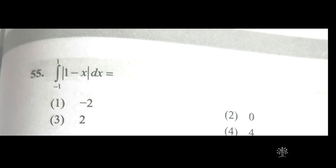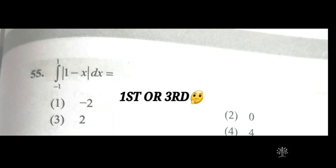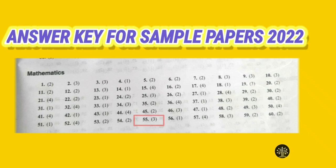The 55th question is also integration. The first option is minus 2 and the third option is plus 2 — similar in magnitude. To find the correct one, we take help from other options. The second option is 0 and the fourth option is plus. Plus appears more than minus, so plus wins. Therefore, the third option (positive 2) is the correct answer. Verified: for question 55, the third option is correct. We solved another question without studying anything from the syllabus.